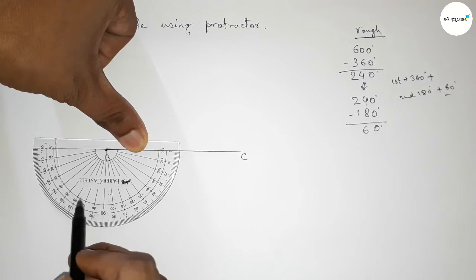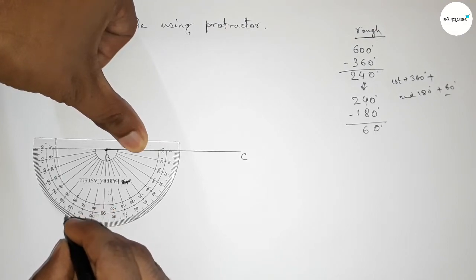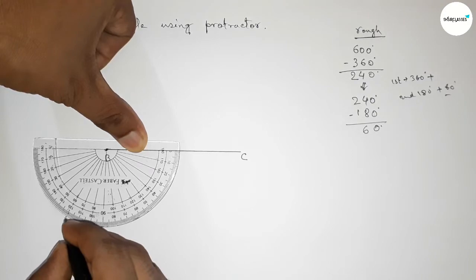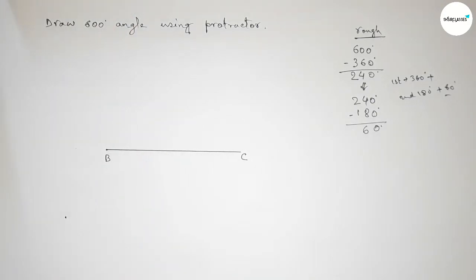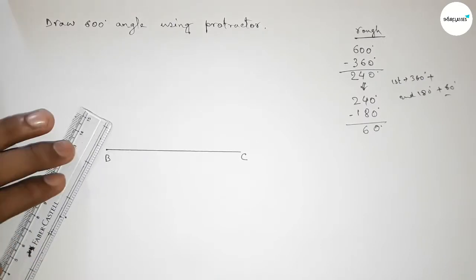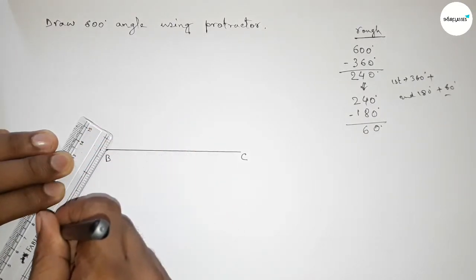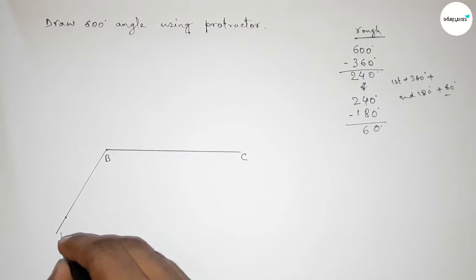So first we drew the 60-degree angle this way. Now joining this line and taking point A here. Now we'll draw a curve starting from here.